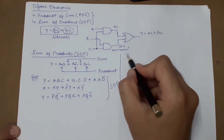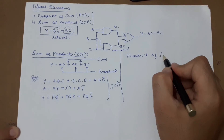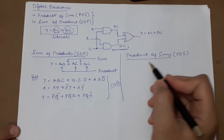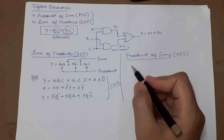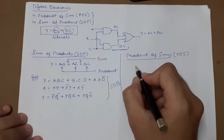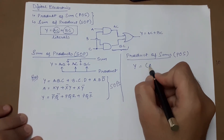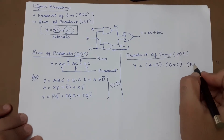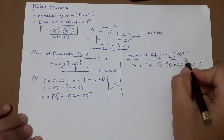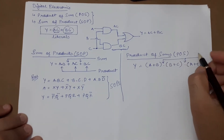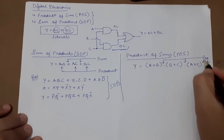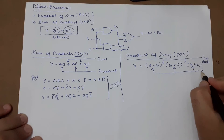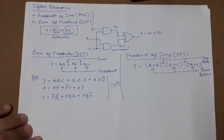The product of sums can be written as POS. In POS form, let's understand with an example: Y equals (A plus B) dot (B plus C) dot (A plus C). Here the dot operator represents the product, and all individual terms in parentheses are considered as the sum of the terms.